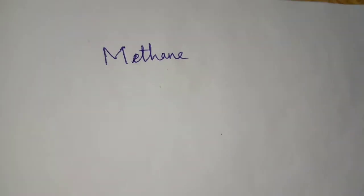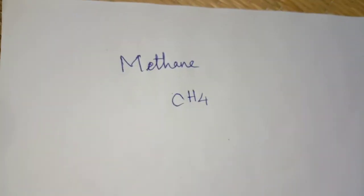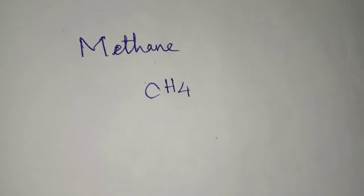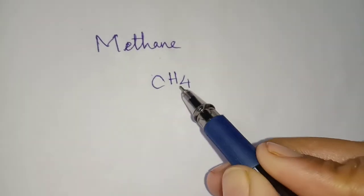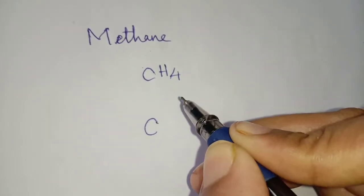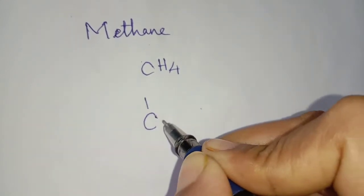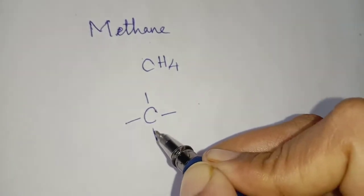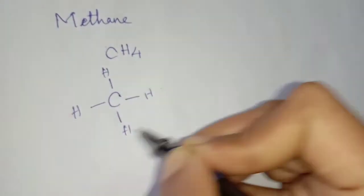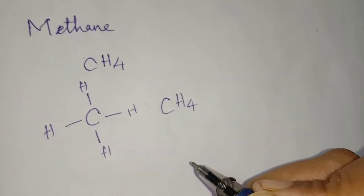What is the formula for methane? CH4 is the formula for methane. In this, how many hydrogen atoms are connected with carbon? 4. So what is the valency for carbon? 4. So how many bonds do we have to write? 4 bonds. So here one hydrogen, here one hydrogen, here one and here one — totally CH4. This is the formula for methane.